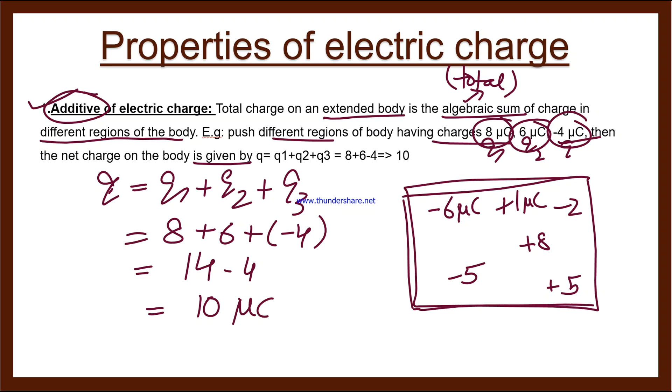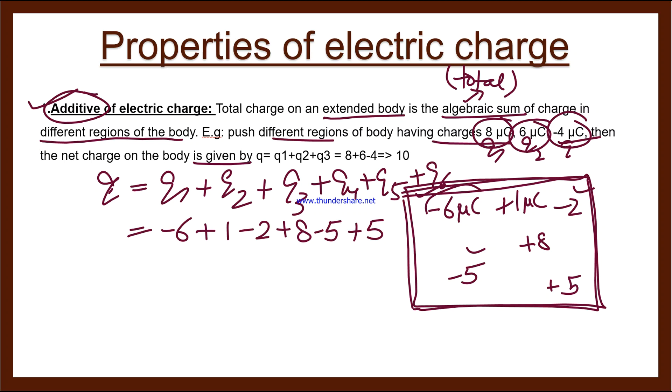So we get 10 microcoulomb. Similarly, in this object that I've taken, there are 1, 2, 3, 4, 5, 6 charges. We can write up to q5, q6 - 6 of them. All are different charges. For all these different charges: q1 is minus 6, q2 is plus 1, q3 is minus 2, q4 is plus 8, q5 is minus 5, q6 is plus 5.